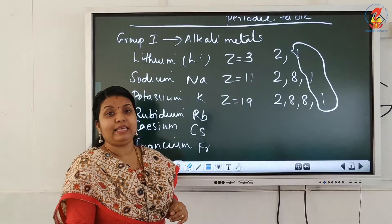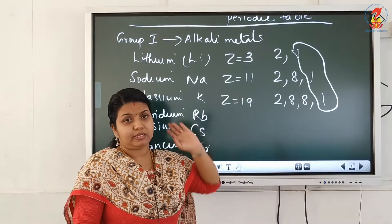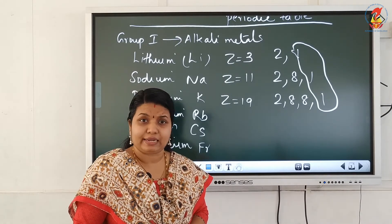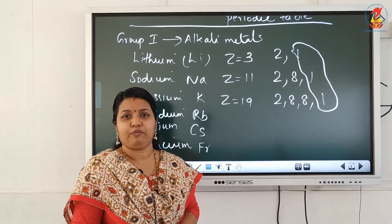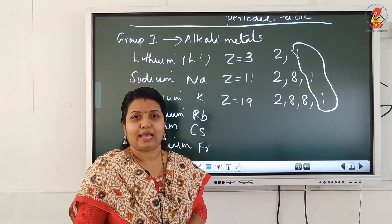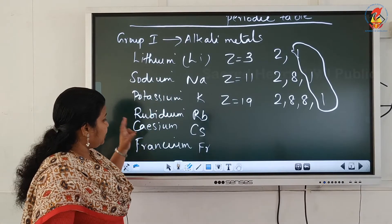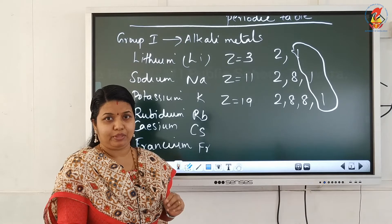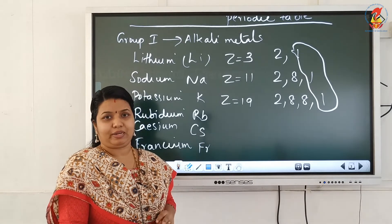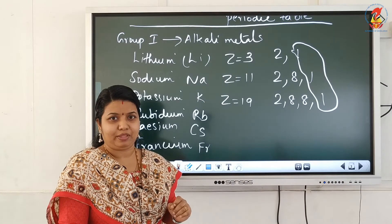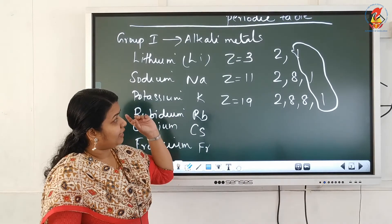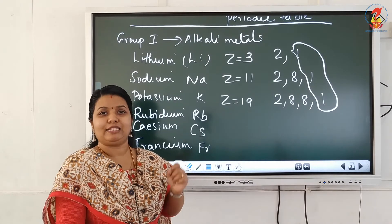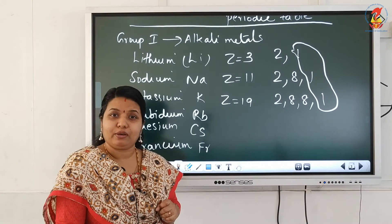Group 1 elements are known as alkali metals because they produce alkalies on reaction with water — when they react with water, they form strong alkalies. All of them have one electron in the valence shell, so the number of valence electrons is the same. They all have a tendency to lose one electron to attain the configuration of the nearest noble gas, so their chemical reactions are similar and their valency is 1.